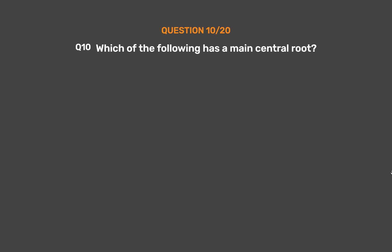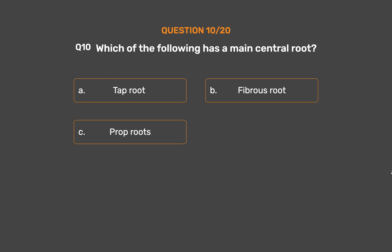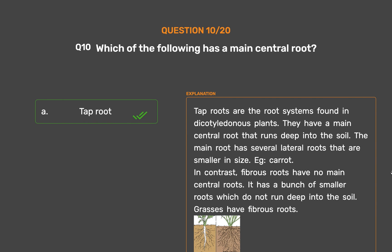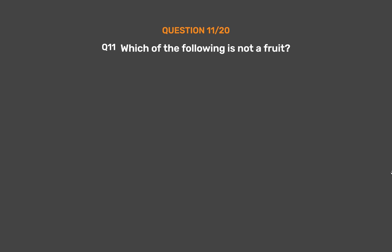Question 10: Which of the following has a main central root? Option A: Tap root, Option B: Fibrous root, Option C: Prop roots, Option D: Soft roots. The correct answer is Option A, Tap root. Tap roots are the root systems found in dicotyledonous plants; they have a main central root that runs deep into the soil with several smaller lateral roots, e.g., carrot. Fibrous roots have no main central root — just a bunch of smaller roots which do not run deep into the soil; grasses have fibrous roots.